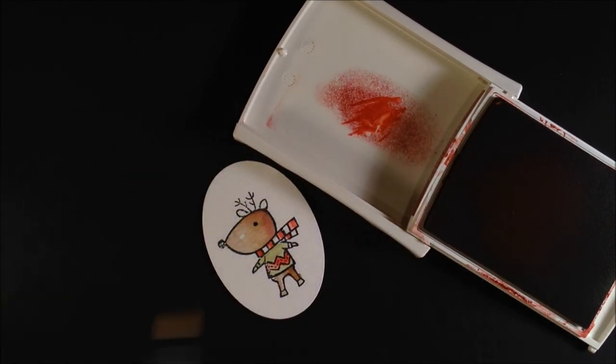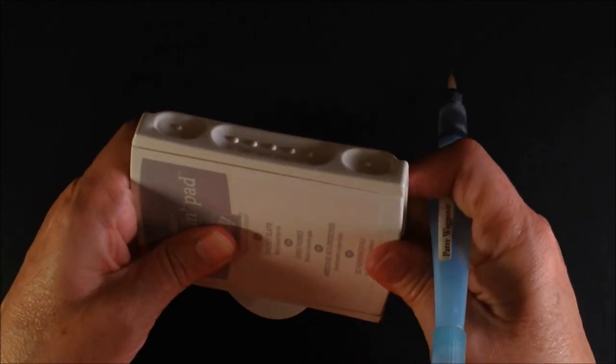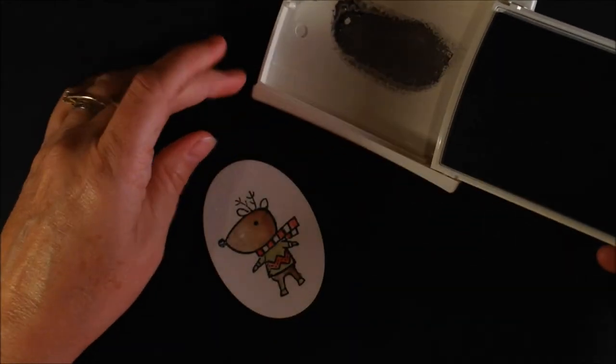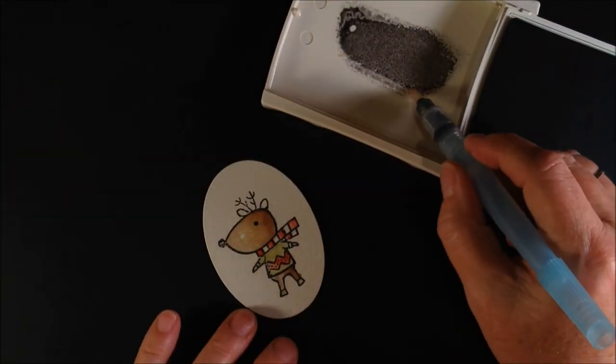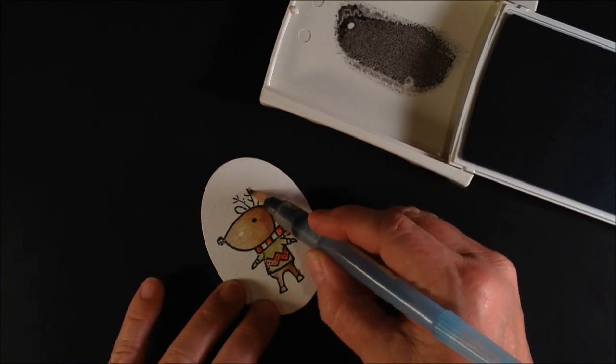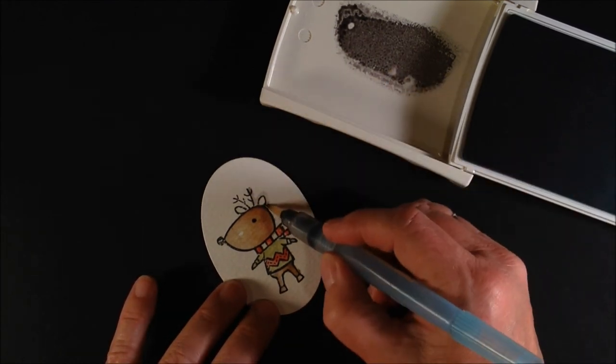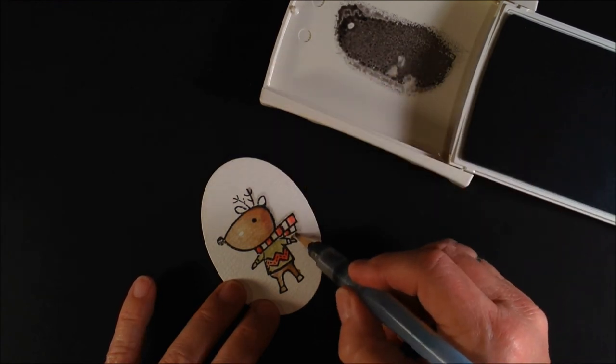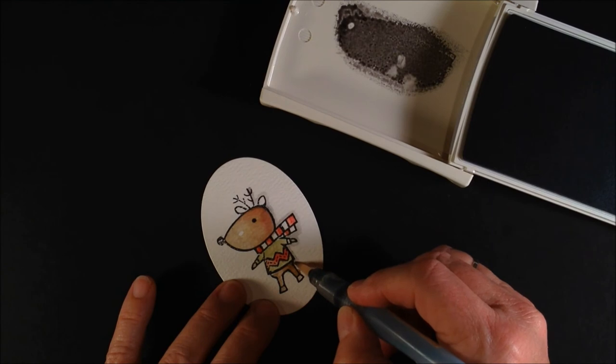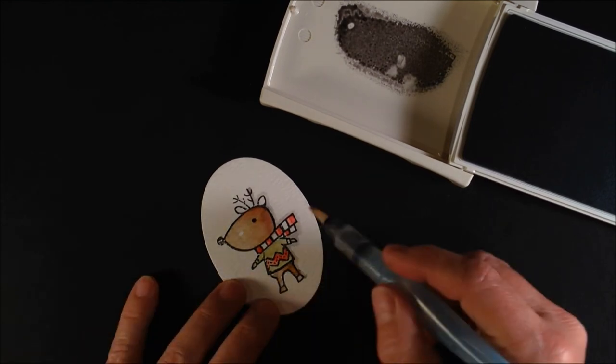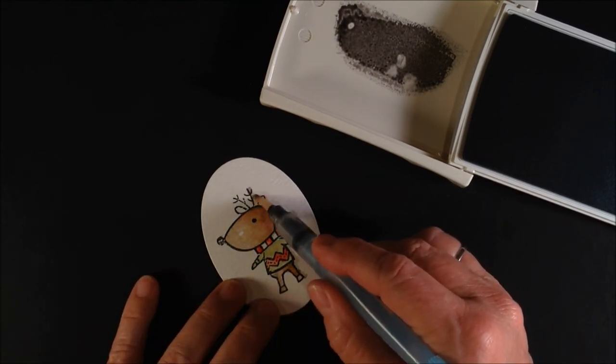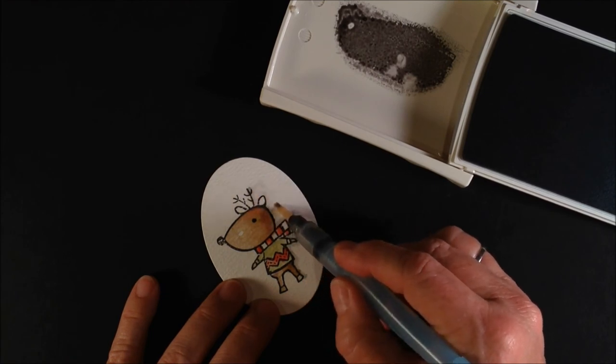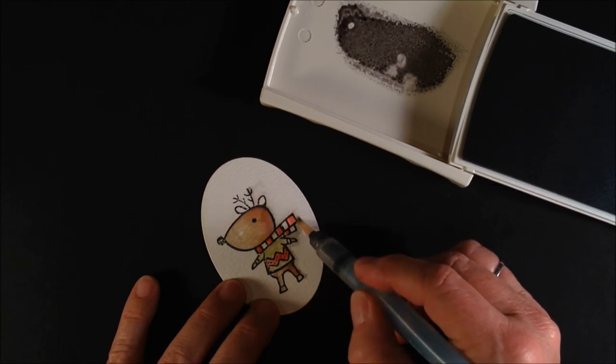Now when you're done doing the main part of your project, you can give it a little shadowing effect. I'm using this Smoky Slate. You can also use a really, really soft blue. But we're going to go in and we're just going to create a shadow on the right side of him with our gray. And again you're going to just kind of blend that into the paper so that it's not one solid edge.